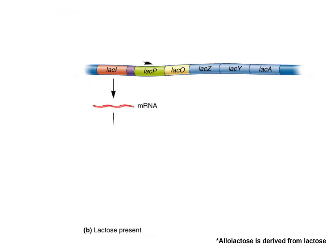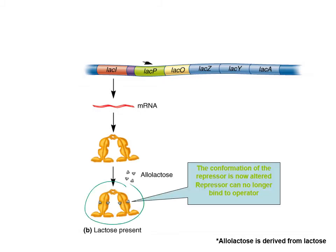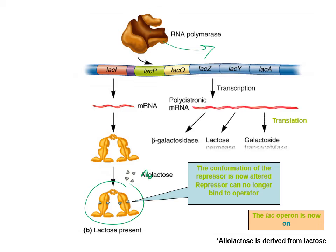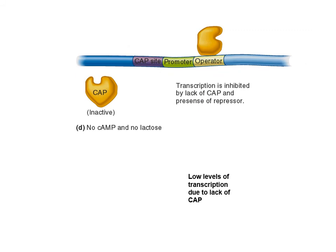If we have lactose present, the repressor gets turned off — lactose acts as an inducer on the repressor, and therefore the repressor does not bind to the DNA. RNA polymerase can bind and we get some production of the lac operon products, the machines necessary to break down lactose. Not very high, though, because if glucose is also present, that's good to break down too. In the scenario with no cAMP and no lactose, the repressor is on there stopping transcription and the activator is inactive, so we get no transcription at all.